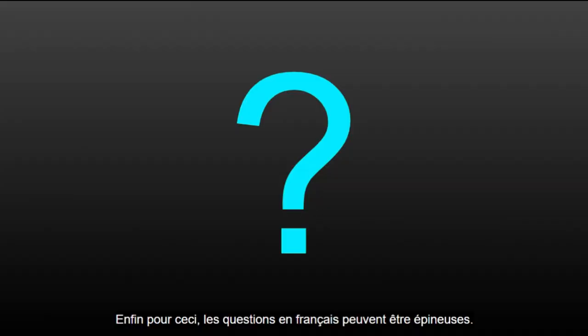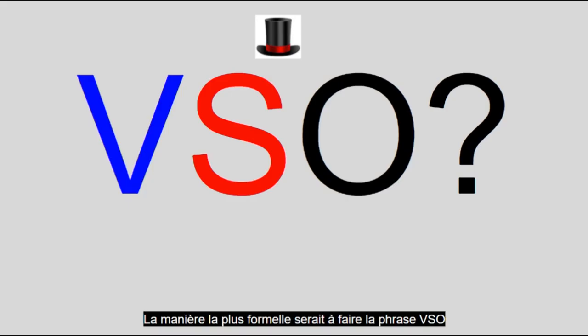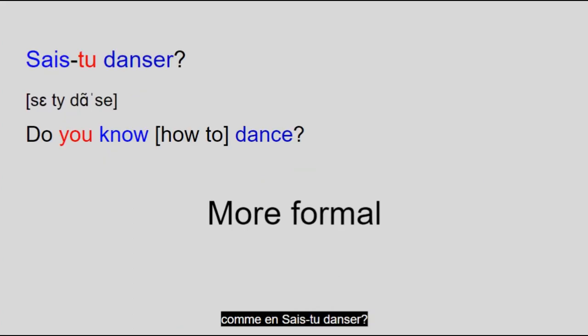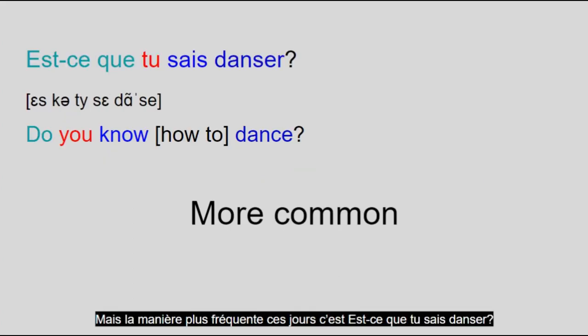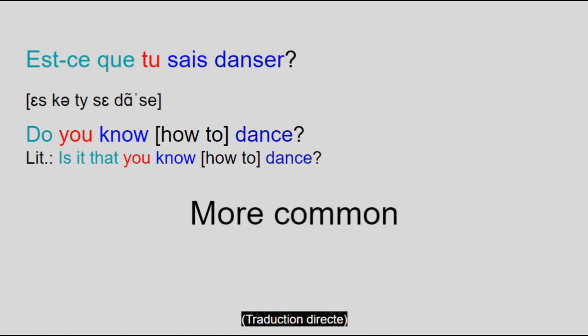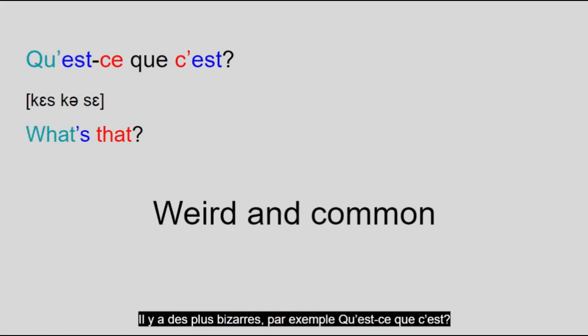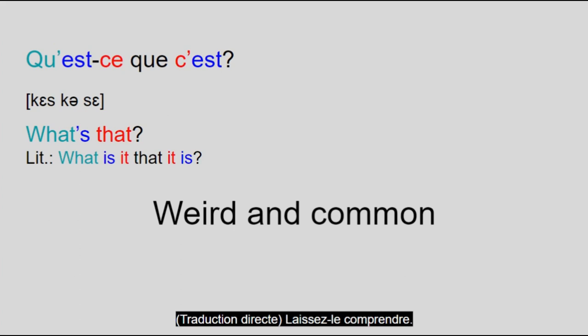Finally for sentence structure, questions in French can be tricky. The more formal way would be to make the sentence VSO and add a dash, like in sais-tu danser? — Do you know how to dance? But the more common way these days is est-ce que tu sais danser?, which literally means 'Is it that you know how to dance?' The question 'what's that' is even weirder — for that you would say qu'est-ce que c'est?, which literally means 'what is it that it is?' Let that sink in.